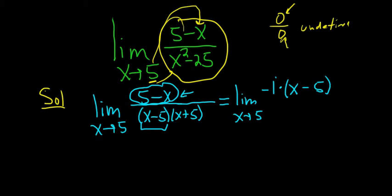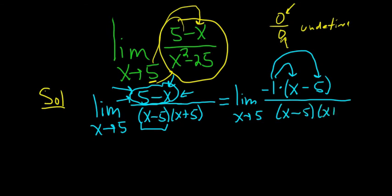You can check your work. Negative 1 times x is negative x, which is right here. And then negative 1 times negative 5 is a positive 5, so it does check. On the bottom, we still have x minus 5, x plus 5.